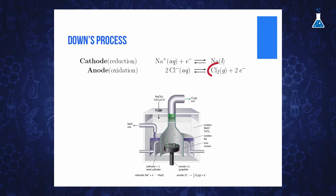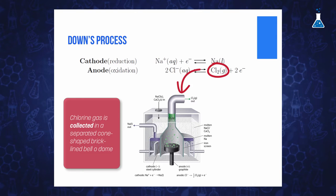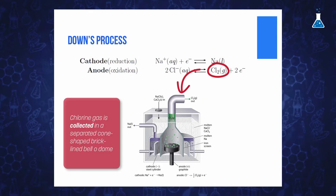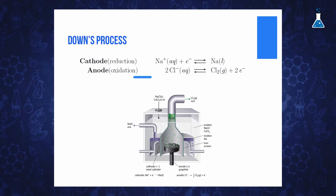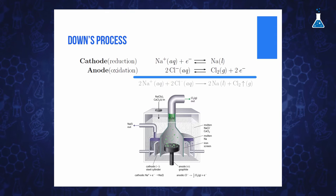At the other electrode, chlorine gas bubbles up to be collected in a separate comb-shaped, brick-lined belt at the top center of the vessel. The overall reaction that takes place is the following.